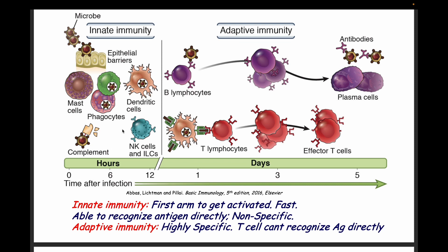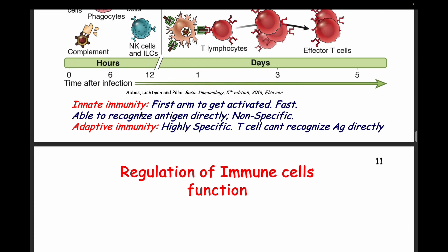The innate immunity includes the first line of defense and the second line of defense. The first line is the skin, mucosa, and secretions. The second line of defense includes neutrophils, basophils, monocytes, macrophages, natural killer cells, the complement system, dendritic cells, and mast cells.